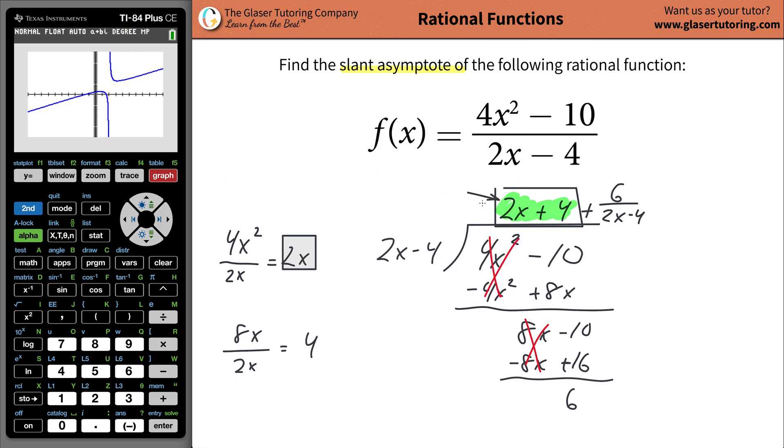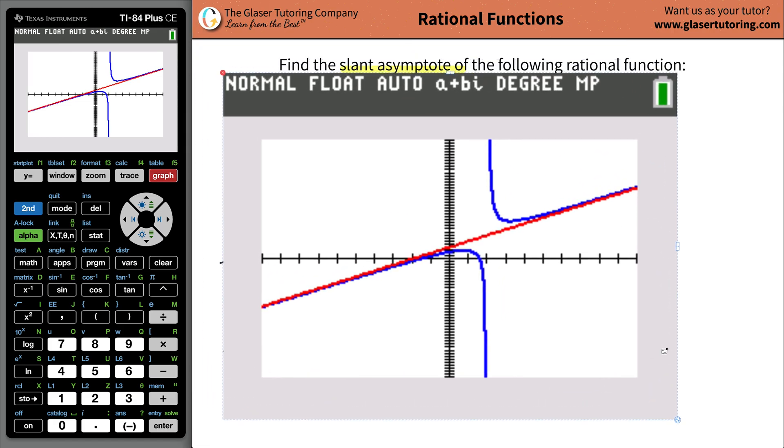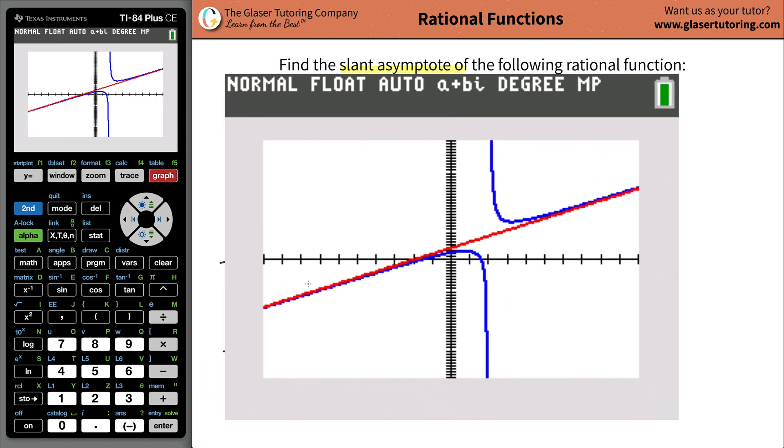Now the function here, we can plot this thing over here, the 2x plus 4. So let's go to y equals, let's go down, we're going to do 2x plus 4, and let's see what happens. Graph. Look at that, there it is. And as you can see, I'll blow it up a little bit. There we go. And as you can see that that slant asymptote, that linear line, definitely approximates that end behavior of the function there. And that's all there is to it, ladies and gentlemen.